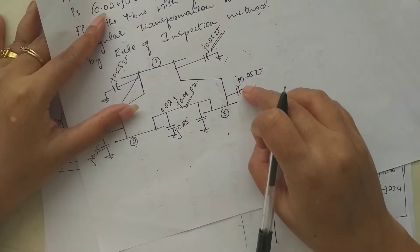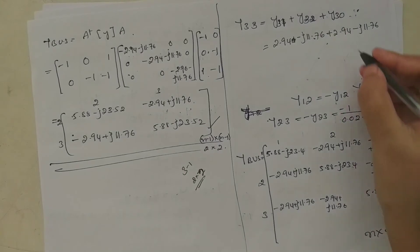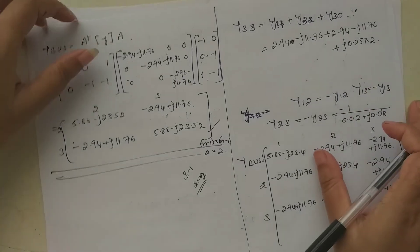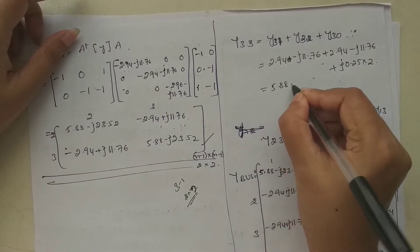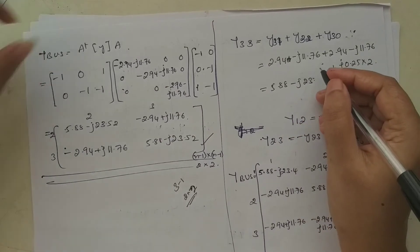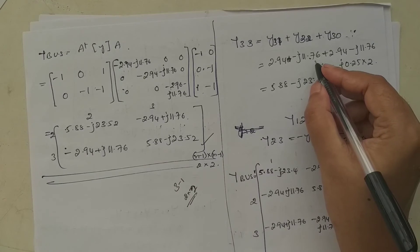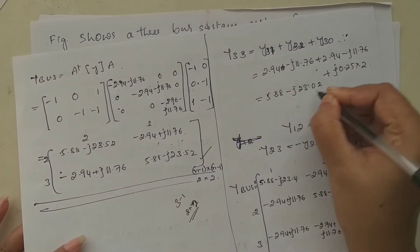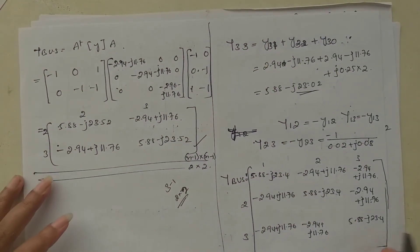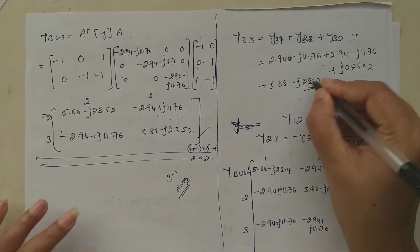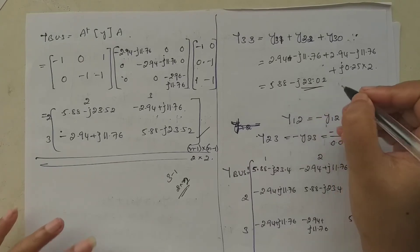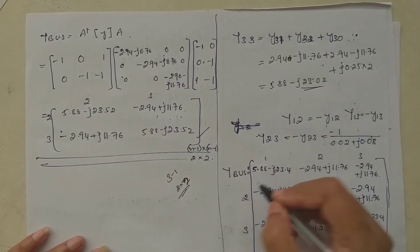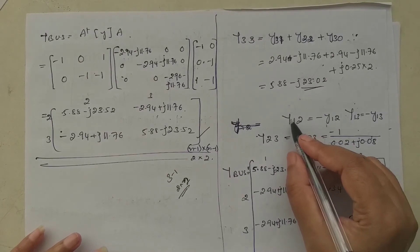For Y33: Y33 = Y31 + Y32 + Y30. Y31 = 2.94 - j11.76 and Y32 = 2.94 - j11.76. Looking at the diagram, node three also has half-line charging admittances of j0.25 on both sides, so Y30 = j0.25 + j0.25 = j0.5. Therefore Y33 = 5.88 - j23.02.